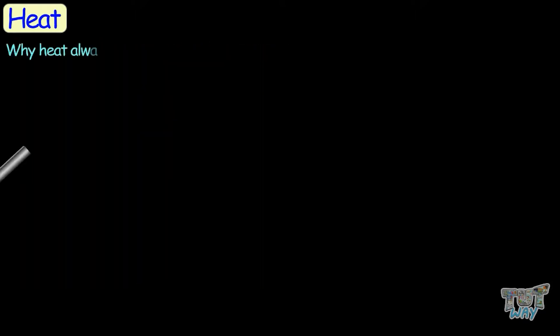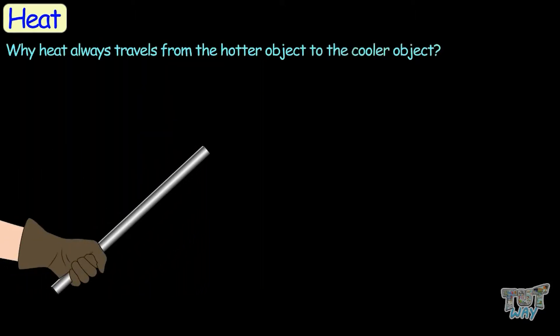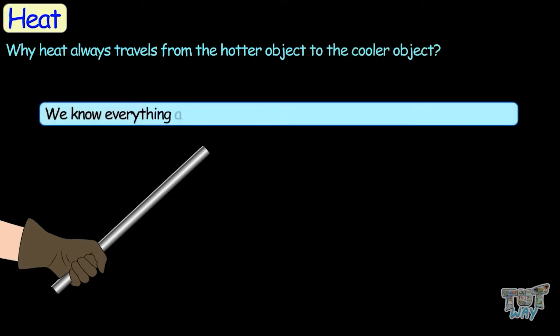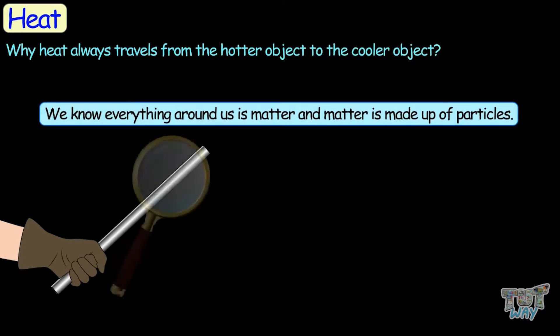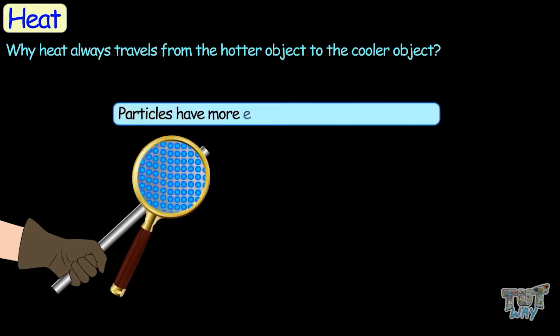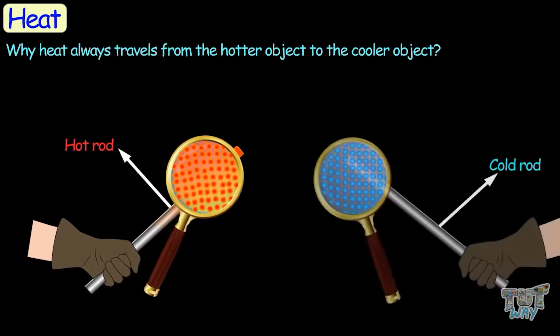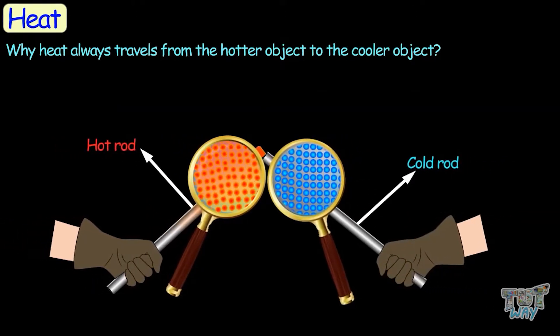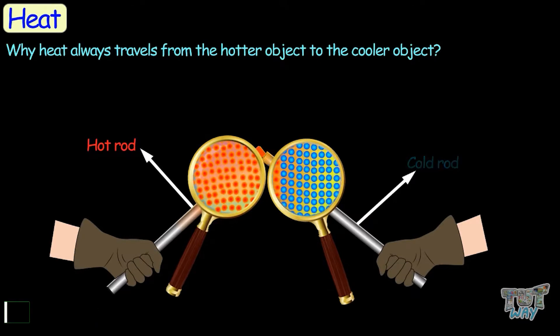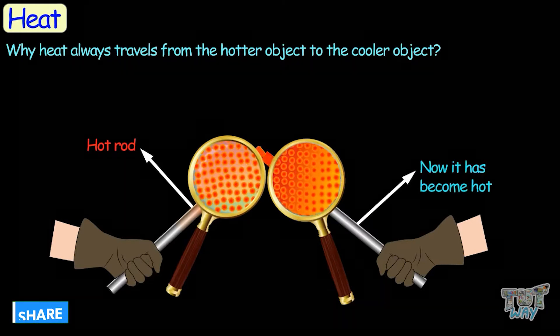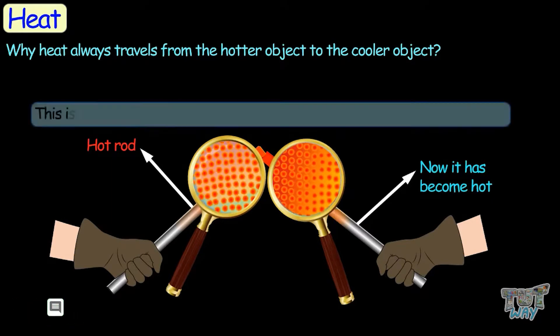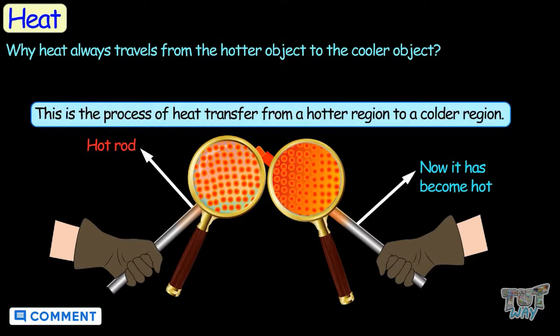Now let's learn why heat always travels from the hotter object to the cooler object. We know everything around us is matter, and matter is made up of particles. Particles have more energy at higher temperatures, so particles of hotter objects collide with slower moving particles of adjacent materials with cooler temperatures. In this way they transfer some of their energy to the slower moving particles, and the process continues until all the particles are moving at the same rate. This is the process of heat transfer from a hotter region to a colder region.